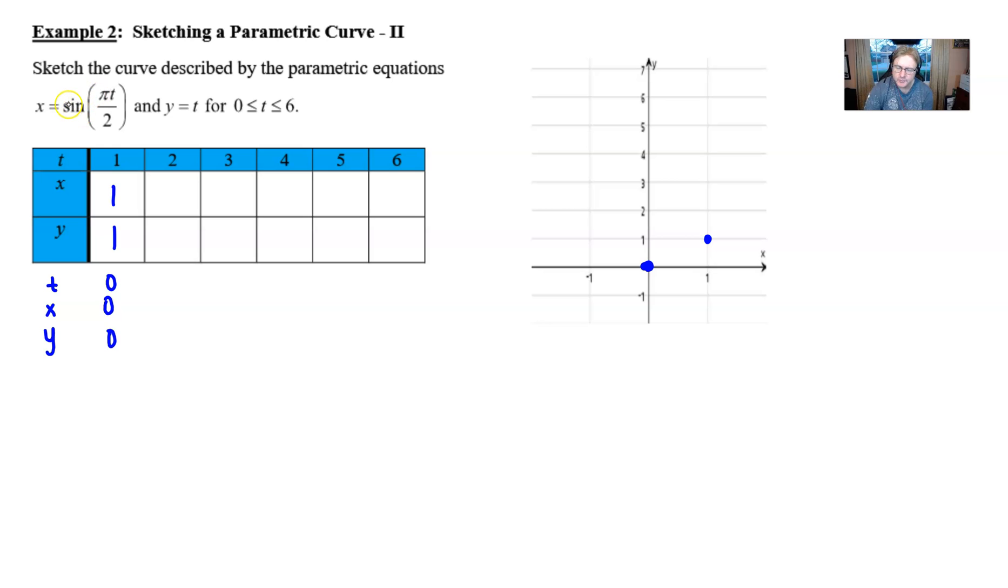Plugging in 2, we get the sine of 2 pi over 2, also known as the sine of pi. The sine of pi is 0, but then y is still going to be 2, which lands us up here.